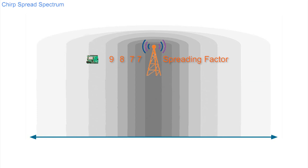If every communication was just allowed to follow this pattern, the temptation would be for the whole network to slow down. To stop this situation from occurring, there's another rule that limits the total amount of time any transmission can take. And this is quite draconian — just 1% of the allowable time.